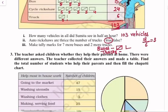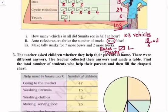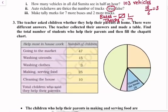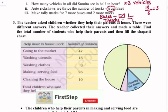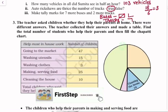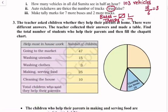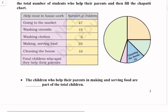Question Number 3. The teacher asked children whether they helped their parents at home. There were different answers. The teacher collected the answers and made a table. Find the total number of students who helped their parents and then fill the chapati chart. So, going to the market - 47 children, washing utensils - 15, washing clothes - 3, making and serving food - 25, cleaning the house - 10.